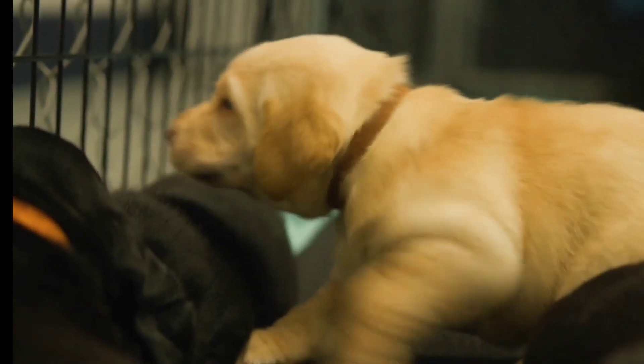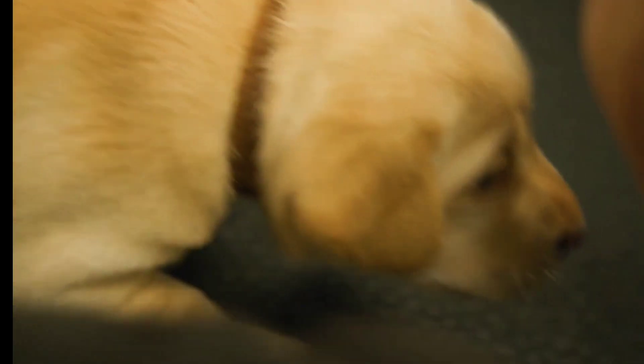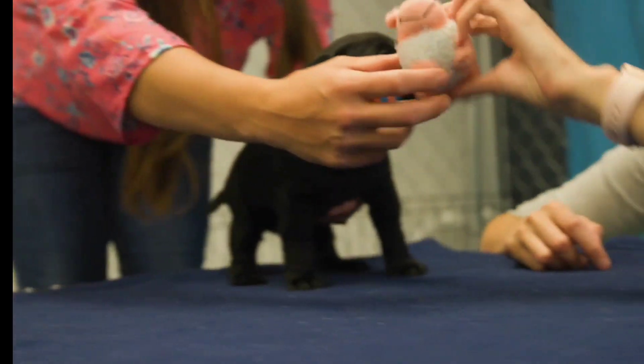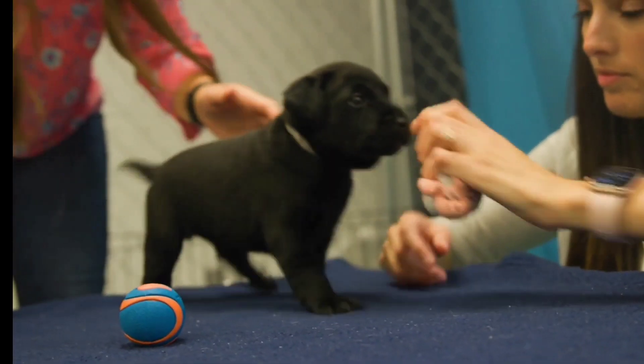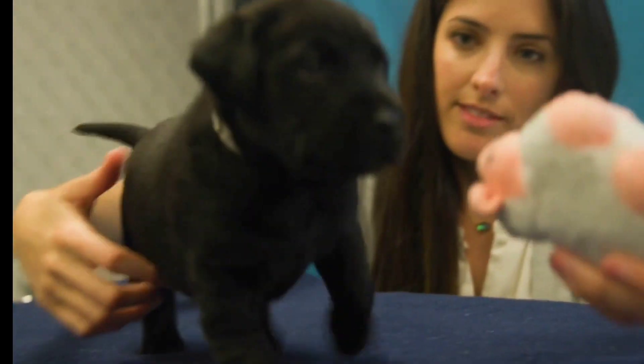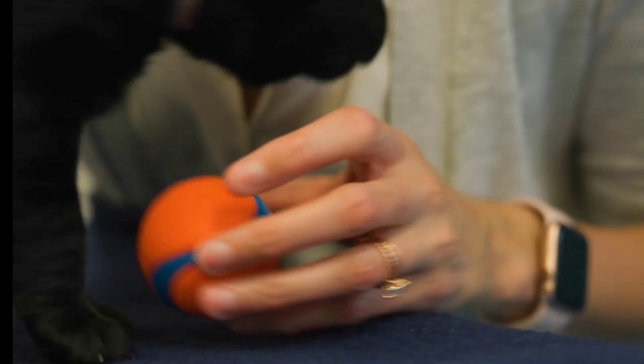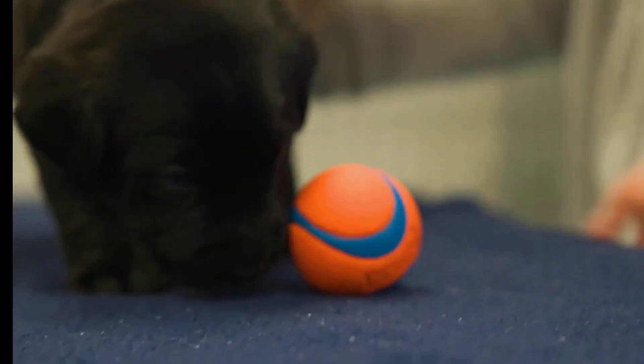The training of a detection dog for any object follows a simple and basic formula. Basically, it's a successive approximation going from very simple to complex, where you teach the dog, this is the odor I want you to find. If you find it, you get a reward. Normally, you find the dog a reward that has value to the dog: food, toy, ball. So the dog learns, when I smell this odor, I'm going to receive a reward, and we teach them the appropriate behavioral response to communicate to the handler that they've encountered that odor.